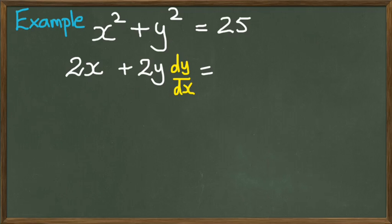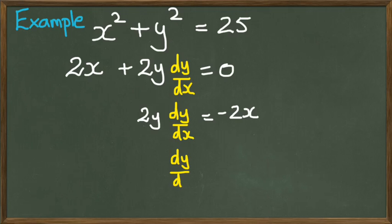And when you differentiate 25, you get 0, and now it's just a matter of rearranging things. So you're going to have 2y(dy/dx), and that's going to equal negative 2x. And if you simplify this, you will simply end up with dy/dx equals negative x over y, because the 2 divided by 2 is just 1. Okay, now, moving on to a question based on this.